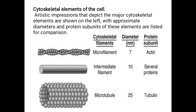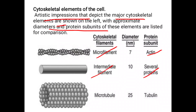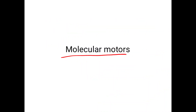This diagram shows artistic impressions of the major cytoskeletal elements with their diameters and protein subunits. Microfilaments are made up of actin, intermediate filaments are made up of several proteins, and microtubules are made up of tubulins.